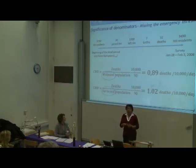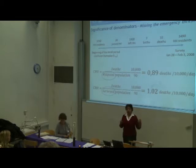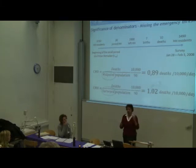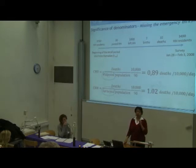We can always say that functionaries in OCHA or wherever should use intelligence to decide whether a figure is close enough to justify release. But most of the time they need a cutoff — it's 1 and that's it, we release the money. So calculation of denominators becomes an extremely critical aspect, given the 1 per 10,000 per day criterion for humanitarian emergencies.